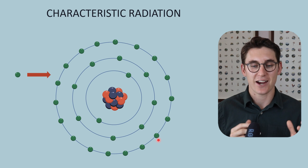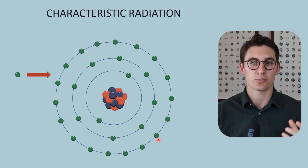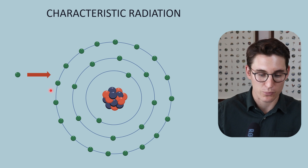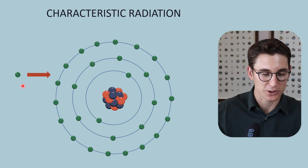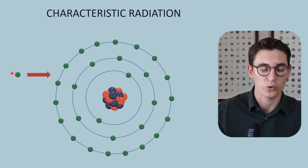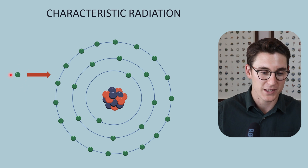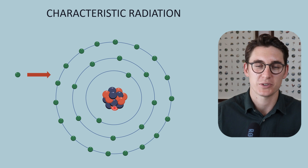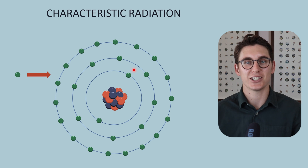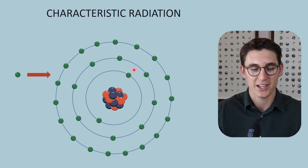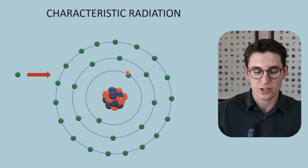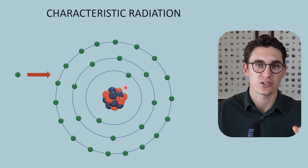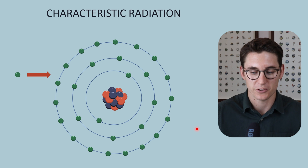So how exactly does characteristic radiation production occur? When we looked at Bremsstrahlung radiation, we saw that that was an interaction between the striking electron — the accelerated electron from the cathode — and the nucleus of our target material. Characteristic radiation differs in the fact that this bombarding electron interacts with inner shell electrons of our anode target material.